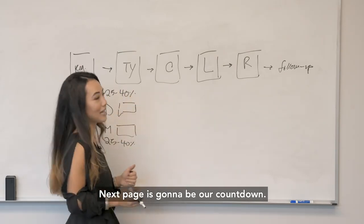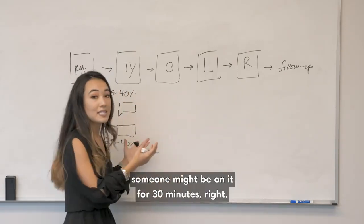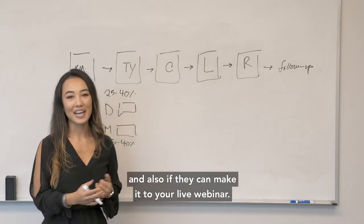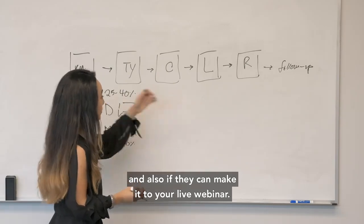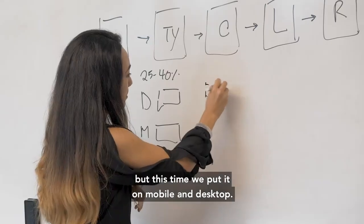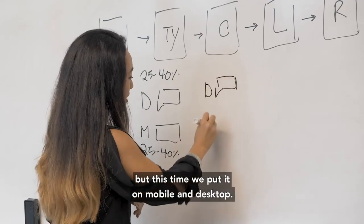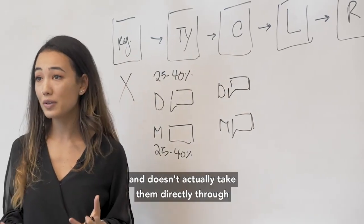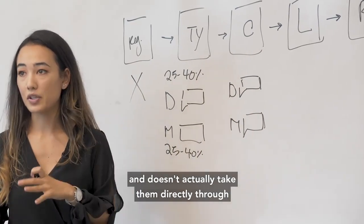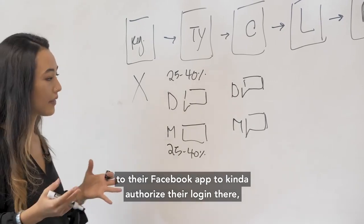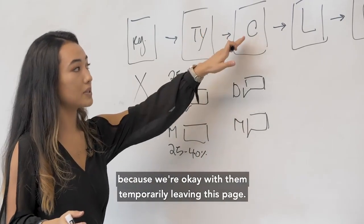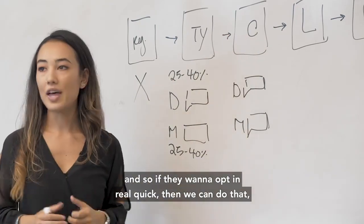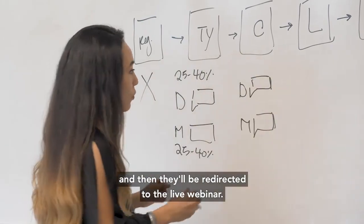Next page is going to be our countdown. So someone might be on this page for three seconds, someone might be on it for 30 minutes, just totally depends on that person, how on time they are, and also if they can make it to your live webinar. On this page, we also add the chat widget, but this time we put it on mobile and desktop. Even though it's not the best experience on mobile, because it does make people log into Facebook on their mobile browser and doesn't actually take them directly through to their Facebook app, at least this is okay because we're okay with them temporarily leaving this page. The live webinar hasn't started yet, and so if they want to opt in real quick, then we can do that, and then they'll be redirected to the live webinar.